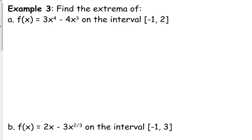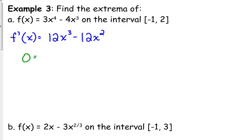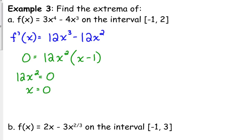Let's do a few problems. We're going to find the extrema of the function 3x⁴ minus 4x³ on the interval from negative 1 to 2. Step one: take the derivative. f′(x) = 12x³ − 12x². We set that equal to zero. Polynomials are never undefined, so we just factor — take out the GCF, which is 12x². We're left with x minus 1. So 12x² = 0 gives x = 0 as a critical number.